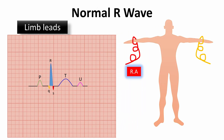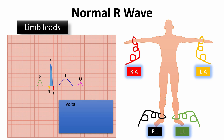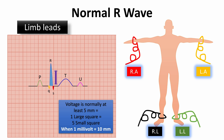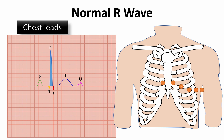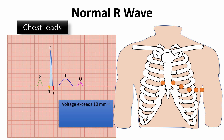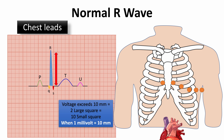R wave voltage is normally at least 5 mm in length — that is one large square or five small squares — when the ECG grid is set to 1 mV equal to 10 mm. In the precordial leads, R wave voltage exceeds 10 mm — two large squares or ten small squares — under the same calibration. This is because chest leads are closer to the heart and will pick up larger wave values.